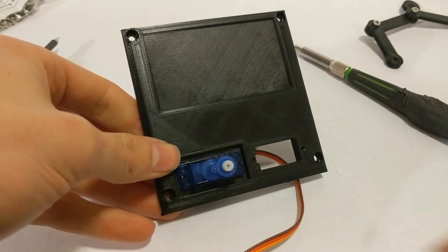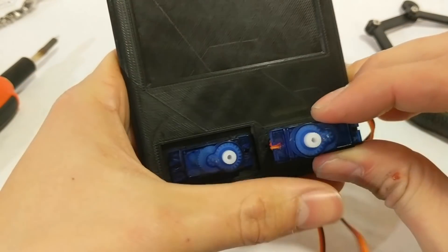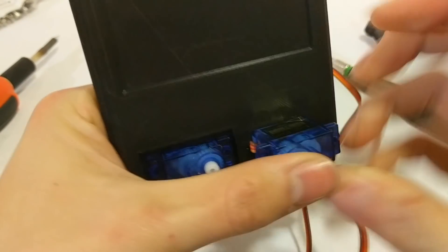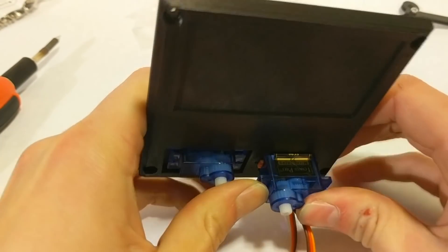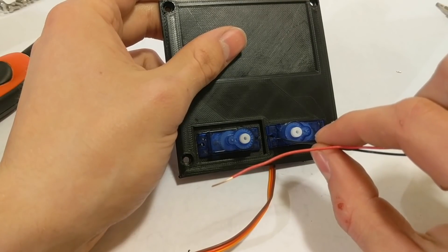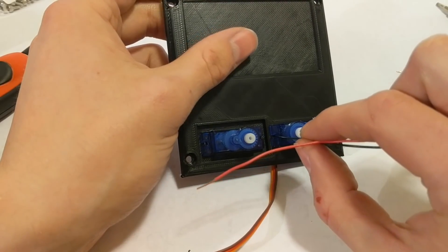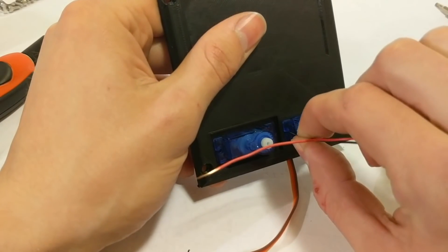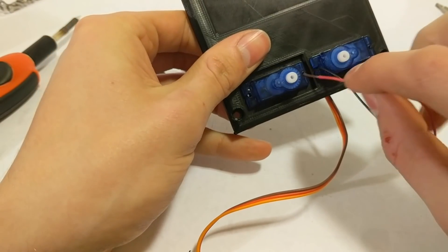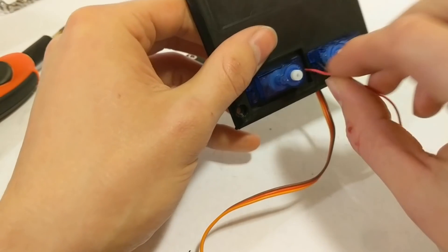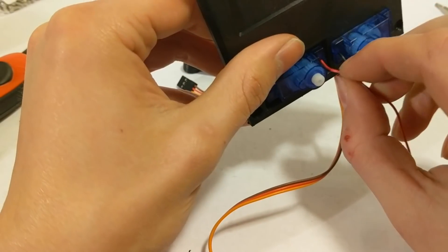I'm going to be sliding the servos into here. This is going to be a pretty tight fit, so these stickers might come off. Look at that. Sticker gets pushed off. These servos seem pretty press fit in there. I don't really see a need to put any additional fasteners in there. So, let's not. Let's just not.